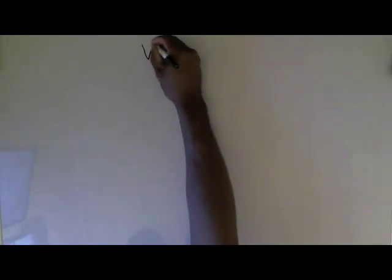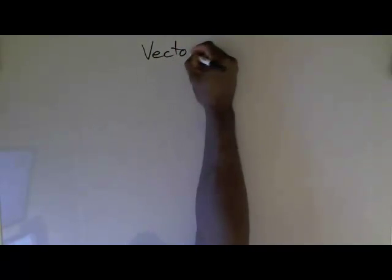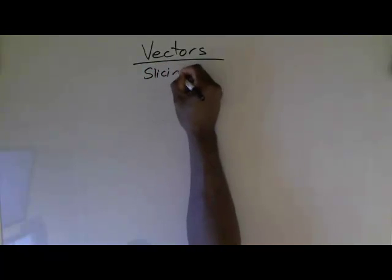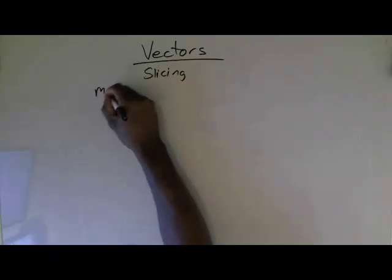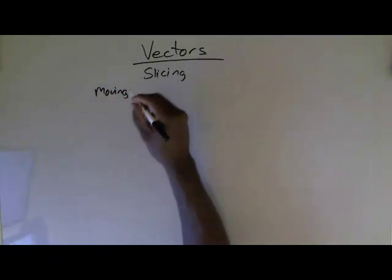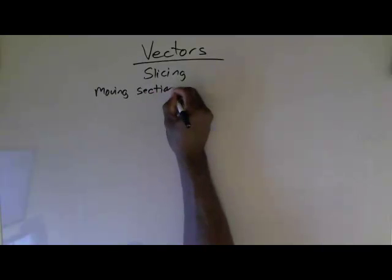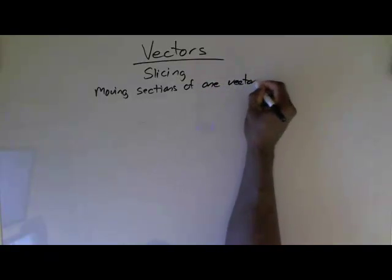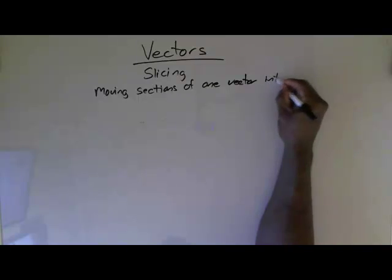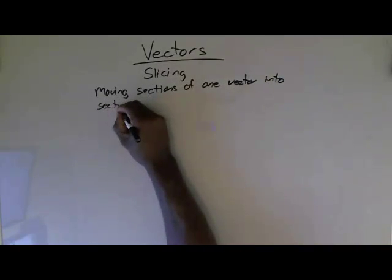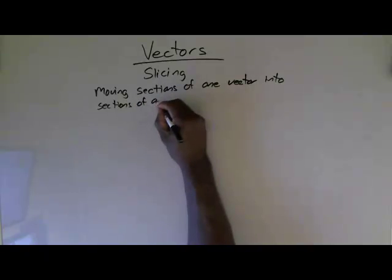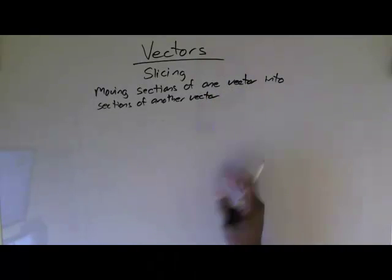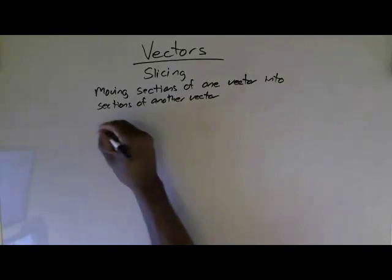Now we're going to go over another topic in vectors called slicing. Slicing is moving sections of one vector into sections of another vector. So we're going to take a chunk out of one vector and move it into another vector.